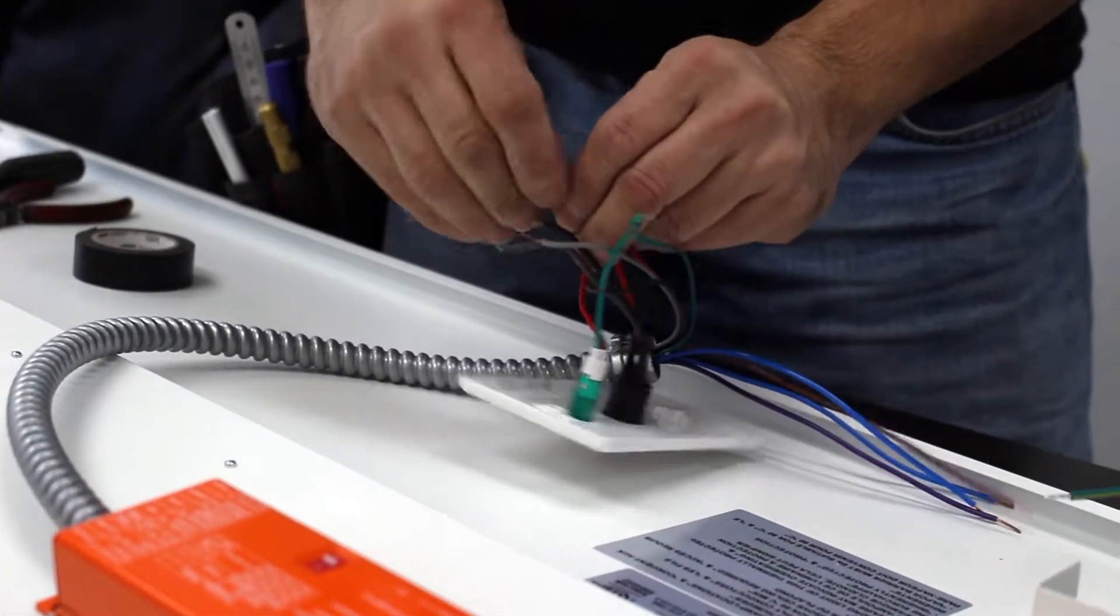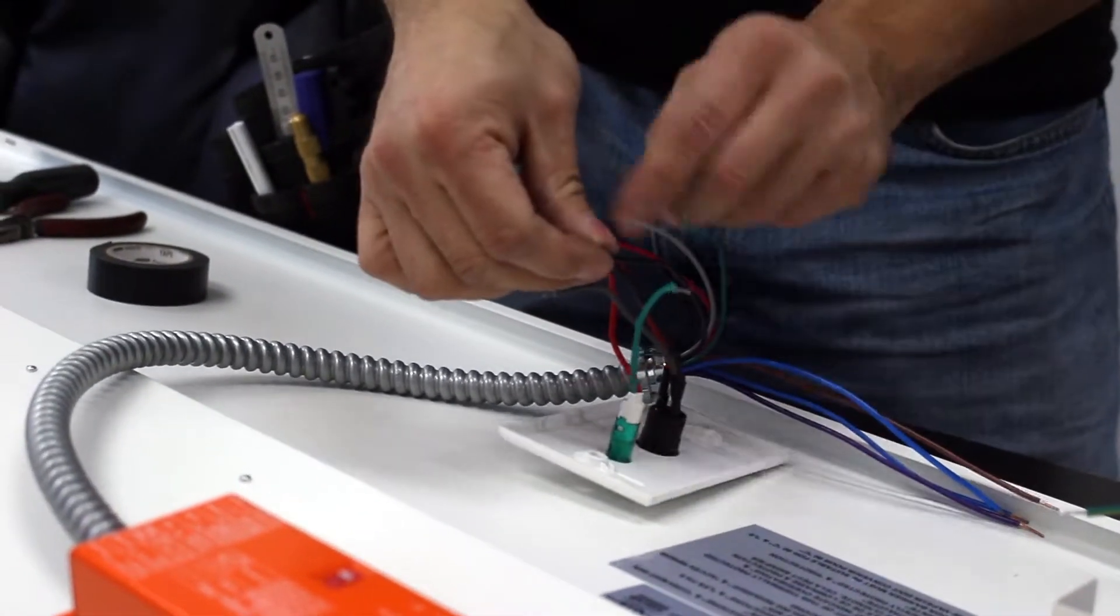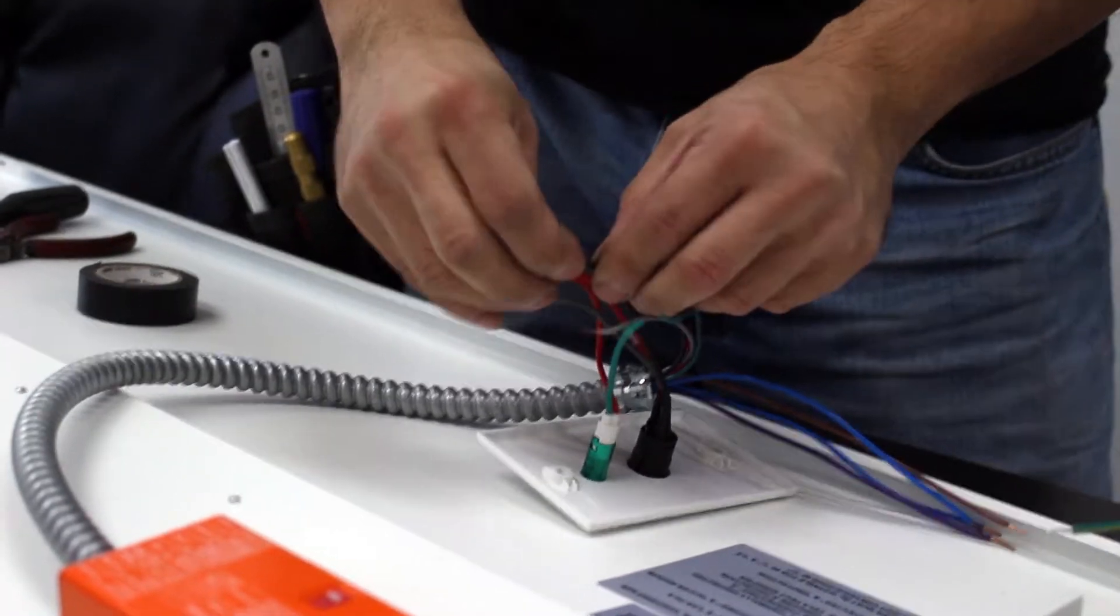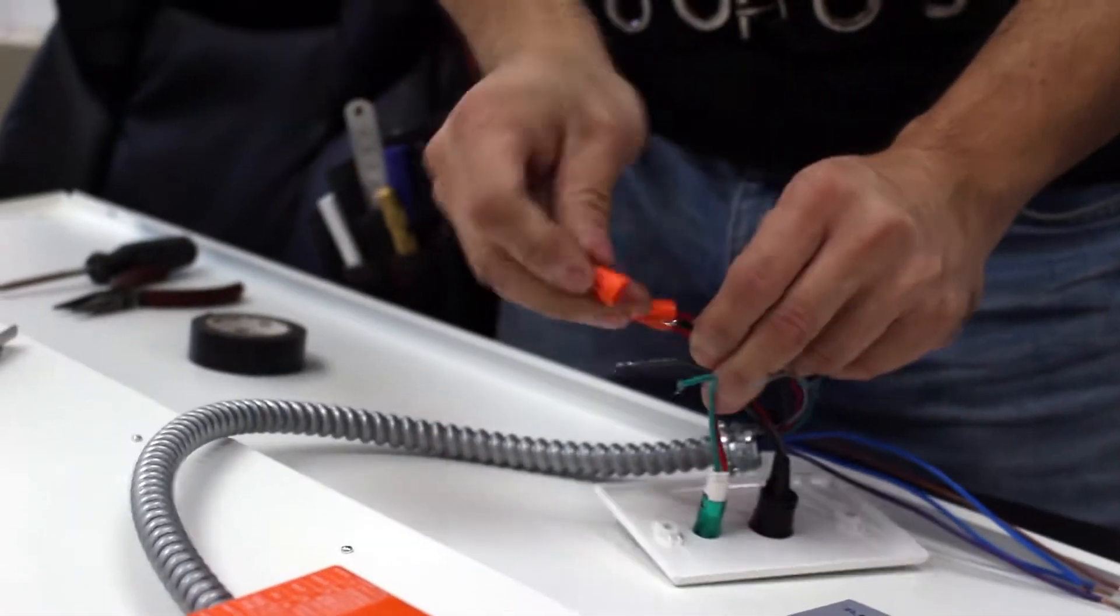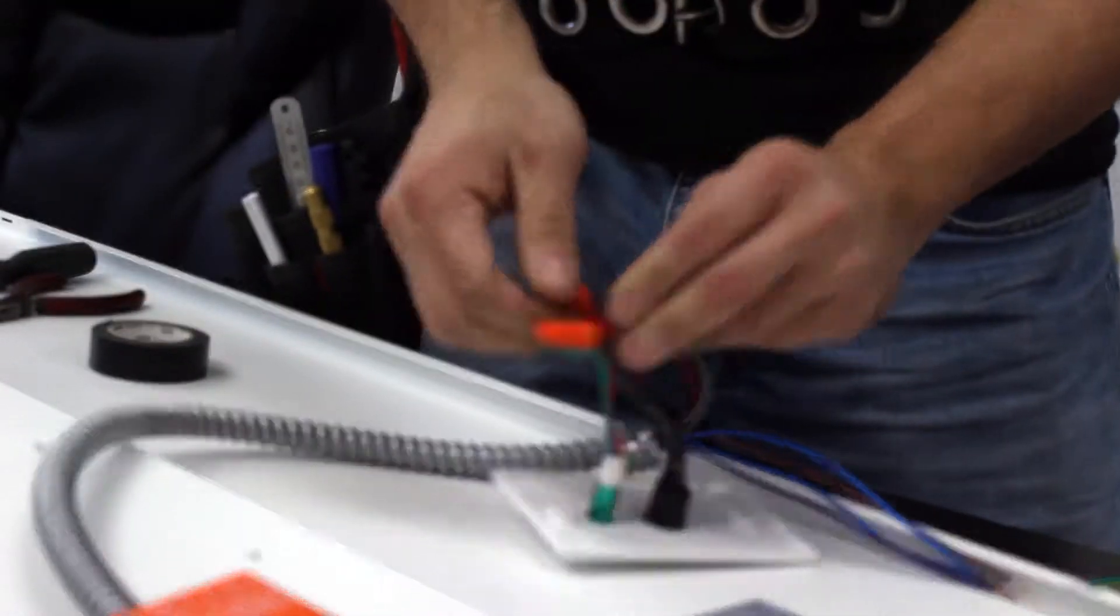To wire the LED troffer with an emergency LED driver, first wire the indicator panel to the driver. Tap the same colored wires together: red to red, black to black, grey to grey, and green to green.